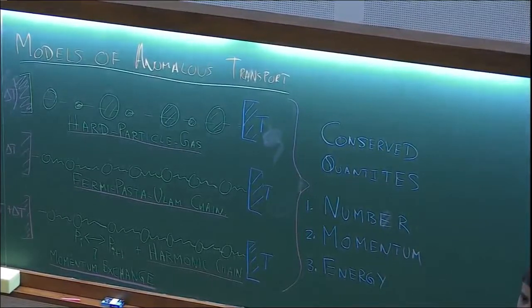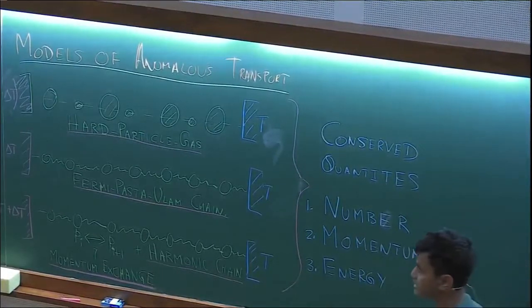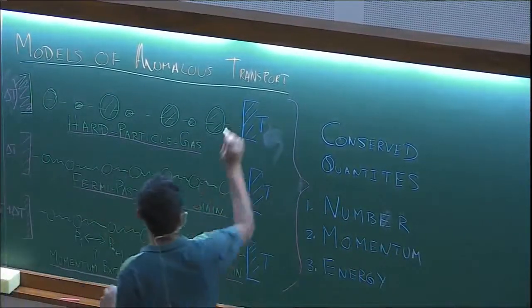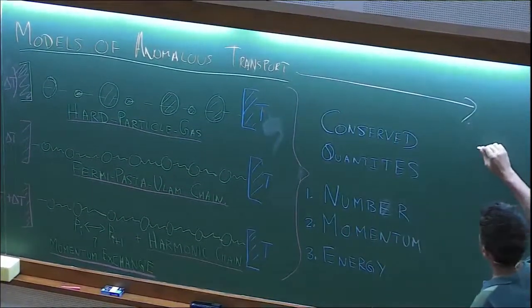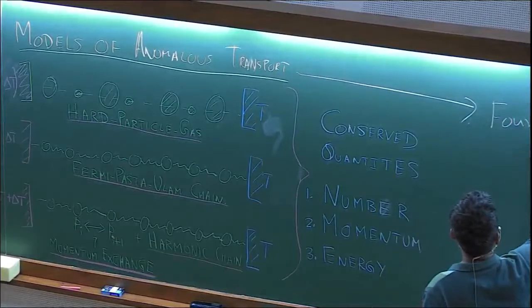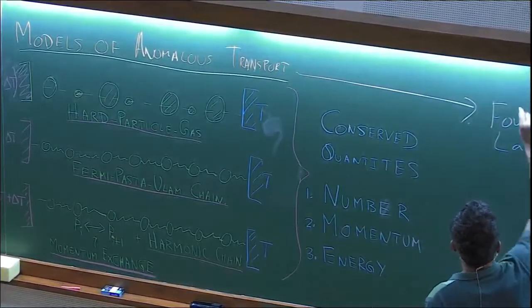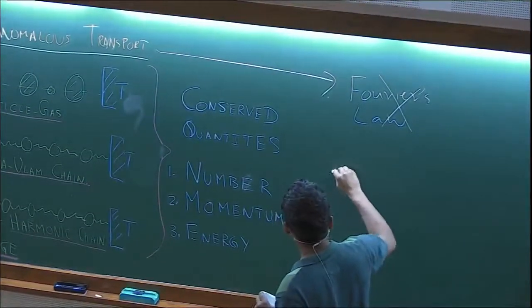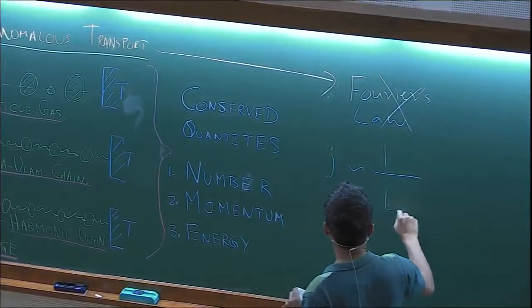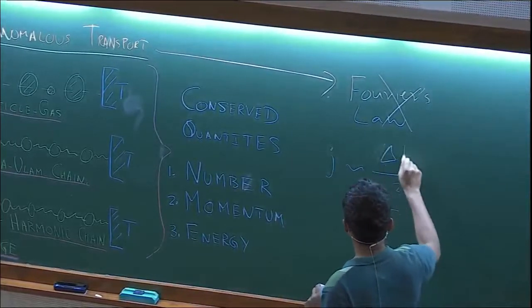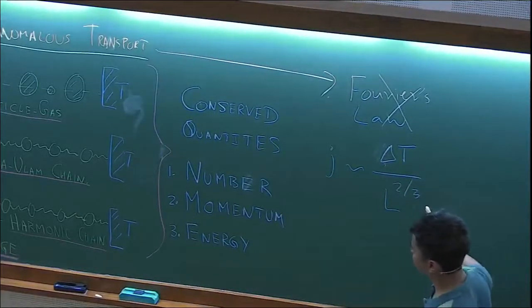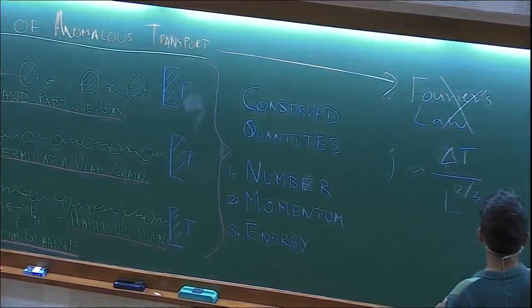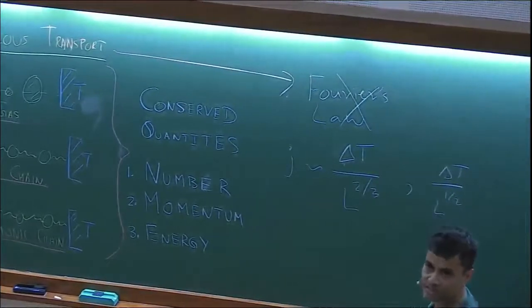Now in these models, from large number of numerical studies and simulations, you find that Fourier's law is not true. That's what anomalous transport means: Fourier's law breaks down. How do you see that? What you find is that the current scales with system size has some different power. This is true for these two models. For the third model, it goes as delta T by L to the power half. That's one signature that you don't have Fourier's law.